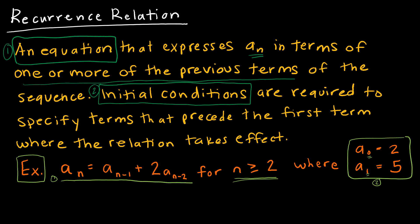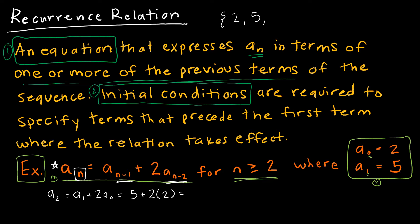Here's how it works. To find a term, I take a(sub n-1) — the term before it — plus 2 times a(sub n-2) — the term before that. That's why we need two initial conditions. We know a(sub 0) is 2 and a(sub 1) is 5. To find a(sub 2): a(sub 1) + 2 * a(sub 0) = 5 + 2*2 = 5 + 4 = 9.